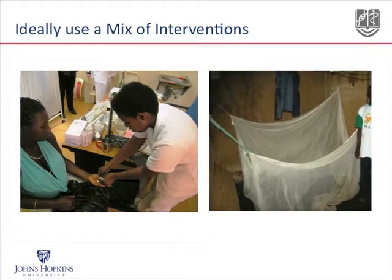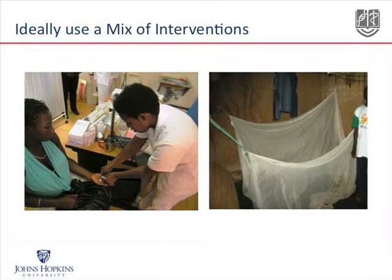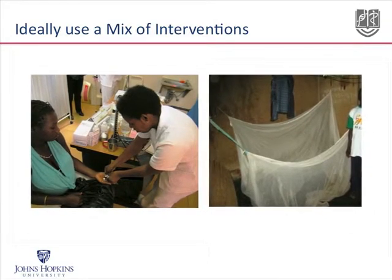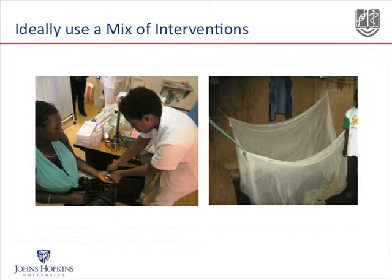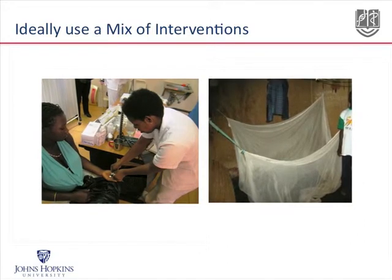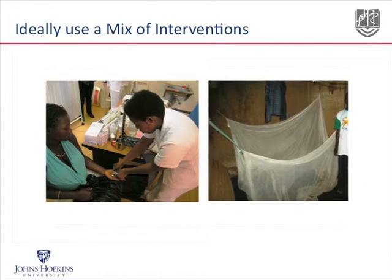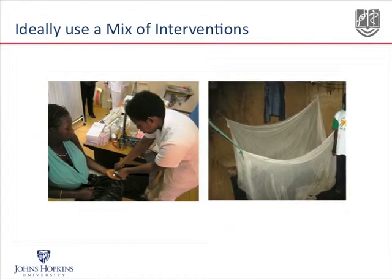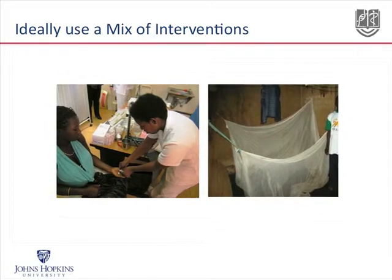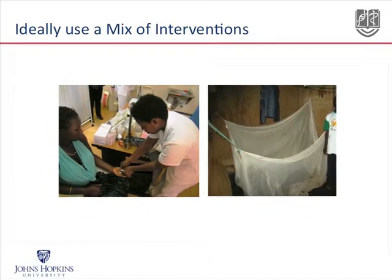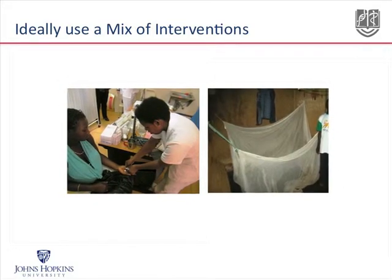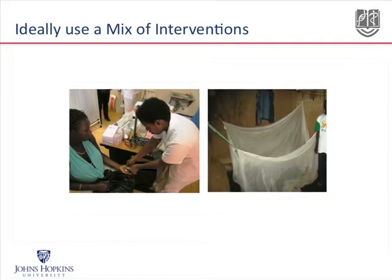In slide twelve, we are stressing the importance of using a mix of interventions — not nets alone, not house spraying alone, not IPT alone — but using every opportunity to reach people and to prevent the disease. In this way, we will be more likely to reduce the incidence of the disease and move closer to eliminating malaria.